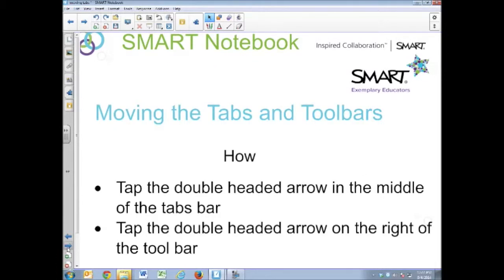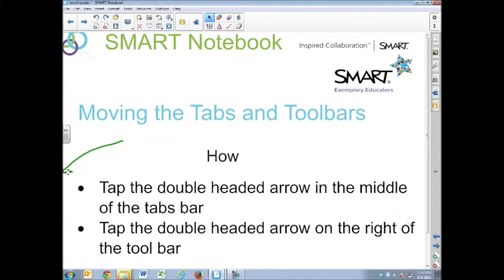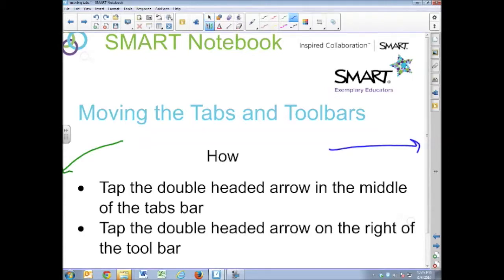So how do we move them? Right in the middle of the tab bar is a little two-headed arrow. When you tap that, boom — it moves to the right side. Now it's where you need it for presenting. This is more natural if you're presenting and right-handed. If you're left-handed, you want to leave it on the left side, since you should be standing on the left side most of the time.